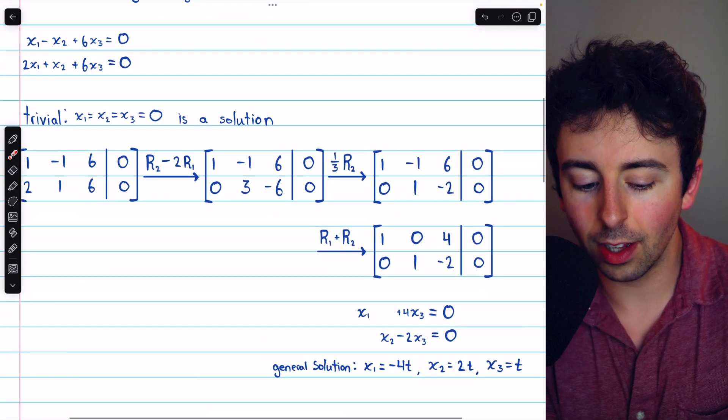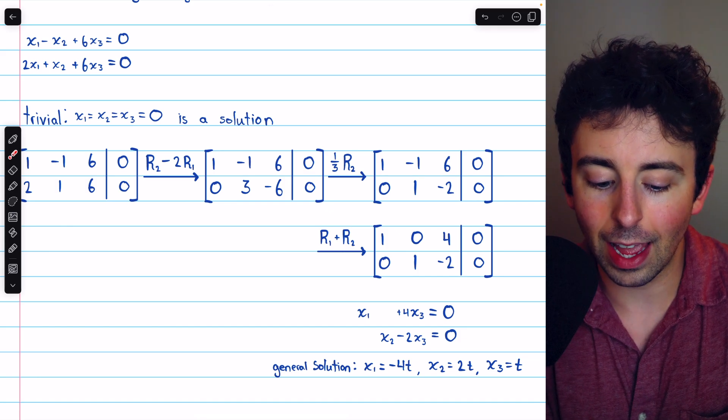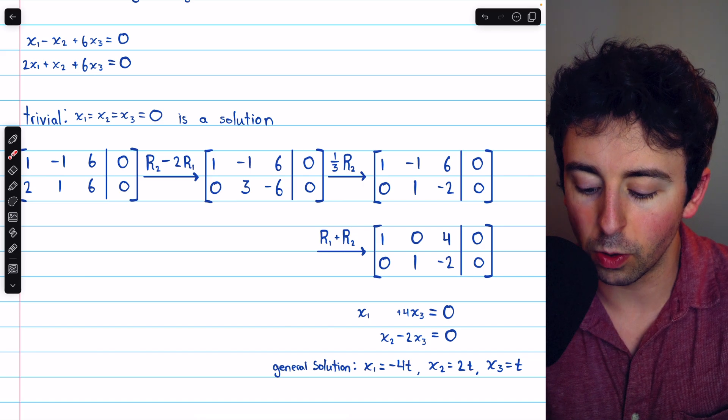And that's the general solution to this homogeneous linear system. Like every homogeneous system, it has the trivial solution. But it also has infinitely many non-trivial solutions.